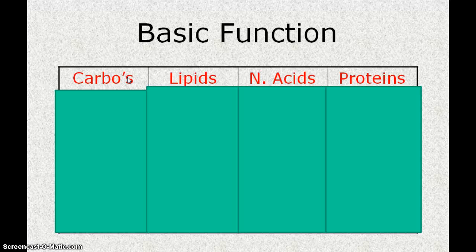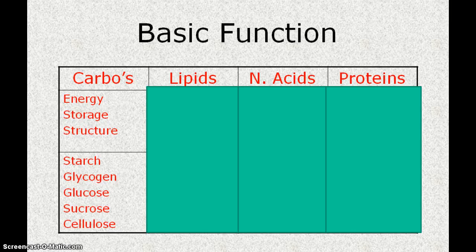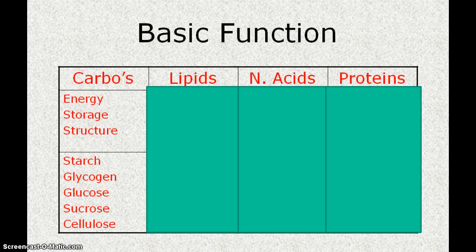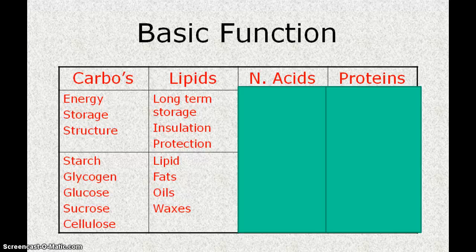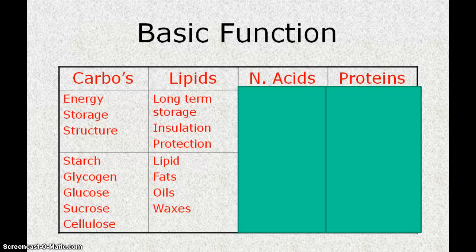So carbs are used for energy. Our body uses it so we can do work. We store carbs and it's also the structural component of a lot of organisms like plants and insects' exoskeletons. Examples of those are right here at the bottom. Lipids are used for longer-term energy and we store that energy often. It can be used for insulation, protection, waterproofing. A lot of our chemical messengers are lipids so they don't dissolve in water.